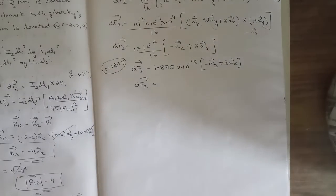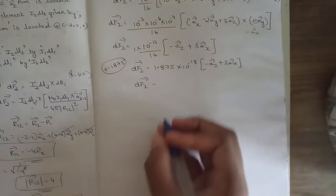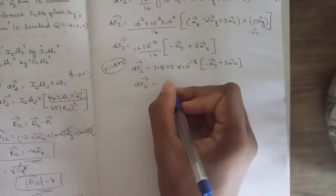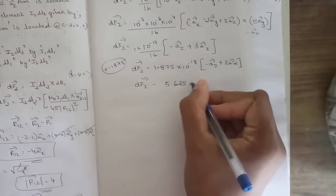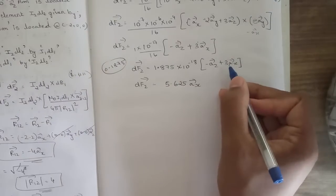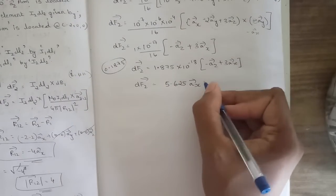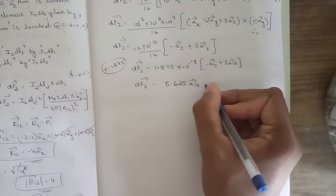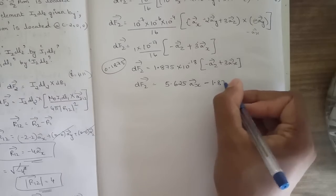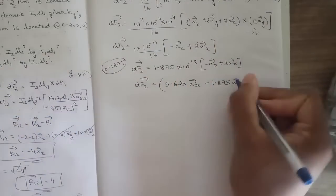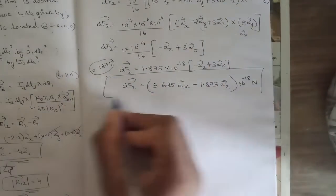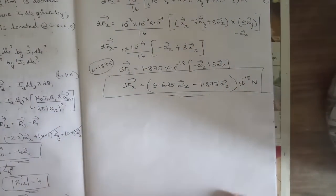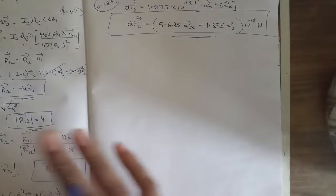The final answer for df2: multiplying 1.875 times 10 to the power minus 18 by the components, we get df2 equals 5.625 ax minus 1.875 az times 10 to the power minus 18 newtons. This is the force exerted on i2 dl2 by i1 dl1.